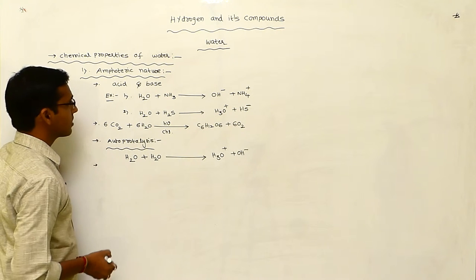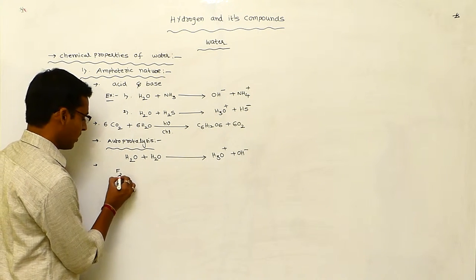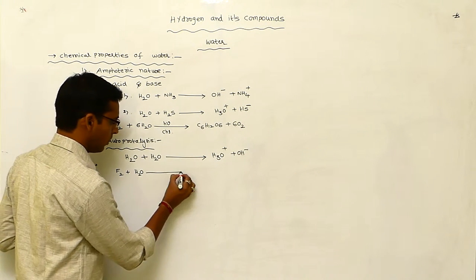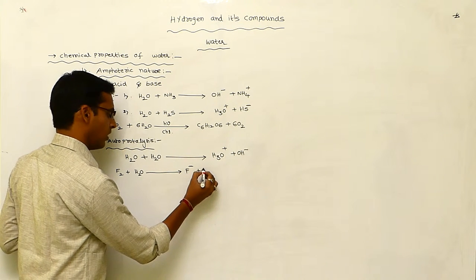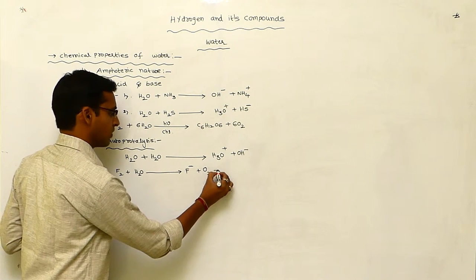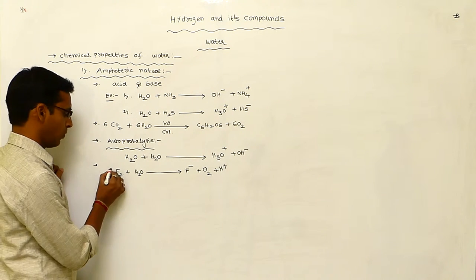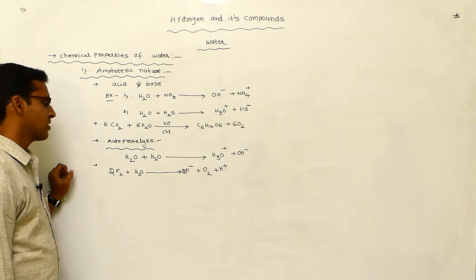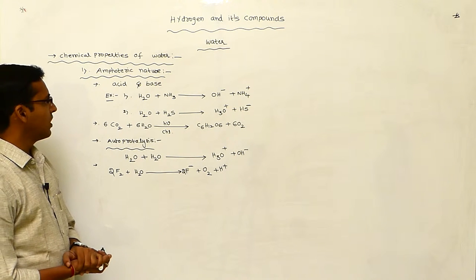This water molecule is easily reduced in nature. Fluorine reacted with water molecule gives F⁻ and O2, with H⁺ also formed. Here, 2F2 reacts with water to produce 4F⁻. This demonstrates the reducing nature of water in reaction with fluorine.